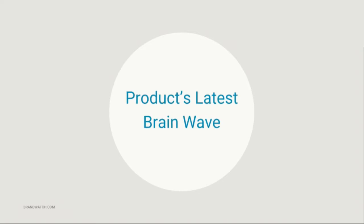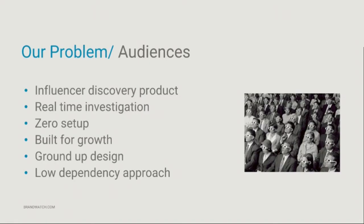Product's latest brainwave: someone came to the engineering department and said we've got a great idea. We're going to build this new product called Audiences - it's influencer discovery. I want to know who are the most influential female developers in the south of England. The system uses various proprietary metrics to work out who are the most influential people with that demographic. They wanted it to be real time. Competitors' products make you wait days or hours; we wanted it to be instant - you just whack in the search you want and it comes back with results.